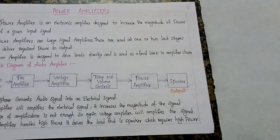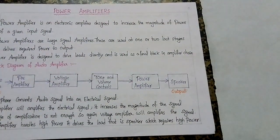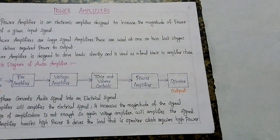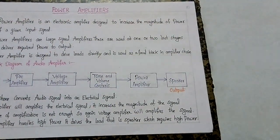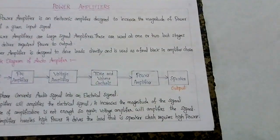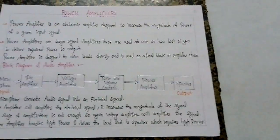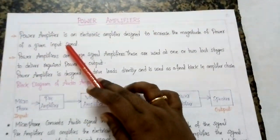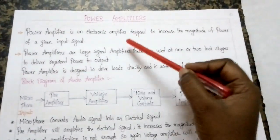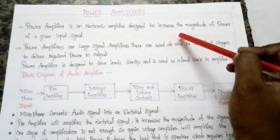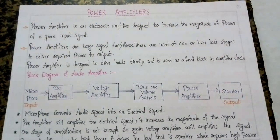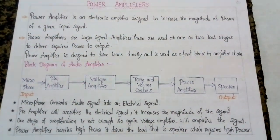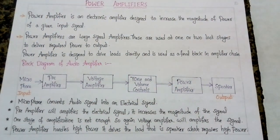The main purpose of using these amplifiers is in order to increase the magnitude of the signal. Now, what is a power amplifier? A power amplifier is an electronic amplifier designed in order to increase the magnitude of power of a given input signal. So we use power amplifiers in order to increase the magnitude of the power.